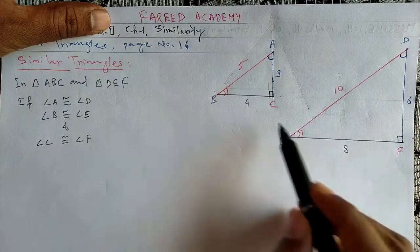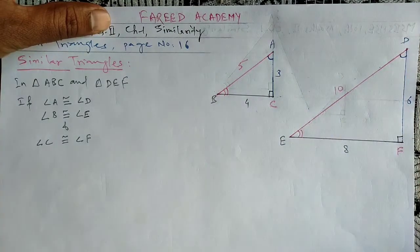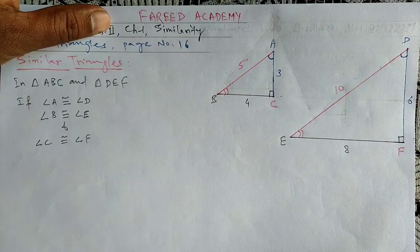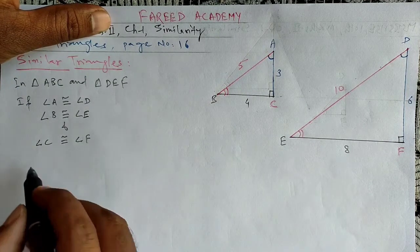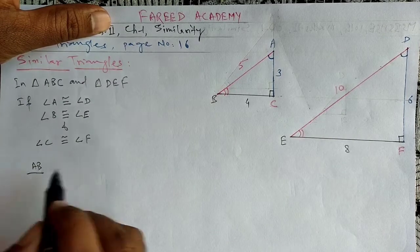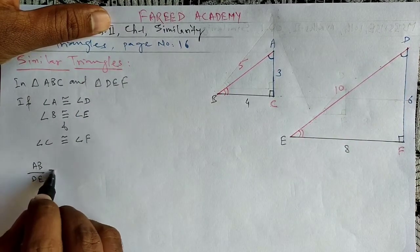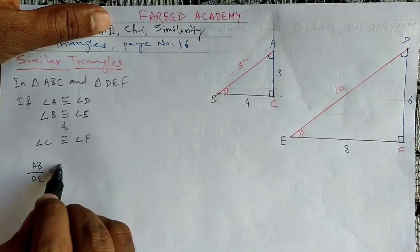The ratio should be constant. For example, we will write AB by DE should be equal to BC by EF.